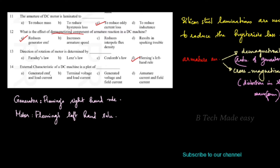Next question: the external characteristics of a DC machine is a plot of what? The options are: generated EMF and load current, terminal voltage and load current, terminal voltage and field current, or armature current and field current.